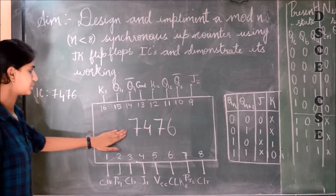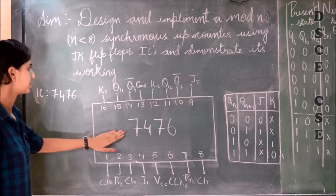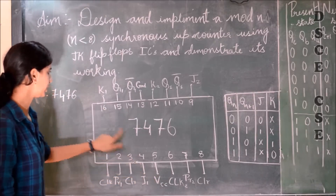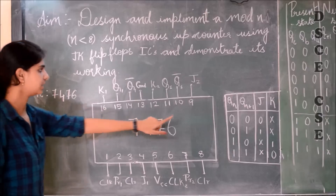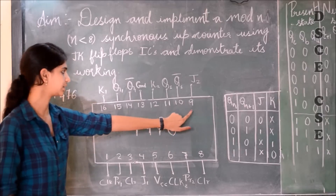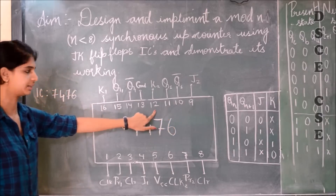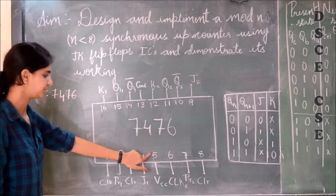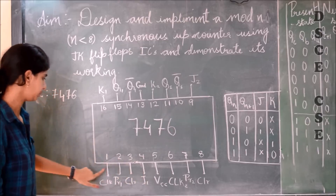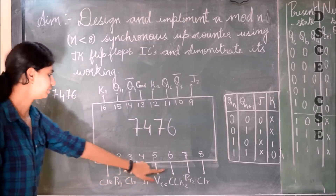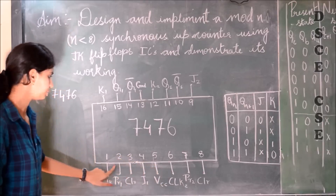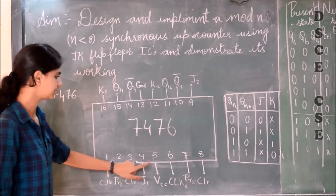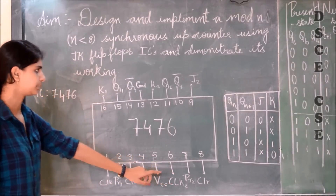In this 7476, we have two J-K flip-flops. J1 and K1 are connected to pins 4 and 16 respectively. J2 and K2 are connected to pin numbers 9 and 12 respectively. Pin number 13 is grounded and pin 5 is given to VCC. Pin numbers 1 and 6 are connected to clock, pin numbers 2 and 7 are preset switches, and pin numbers 3 and 8 are connected to clear.